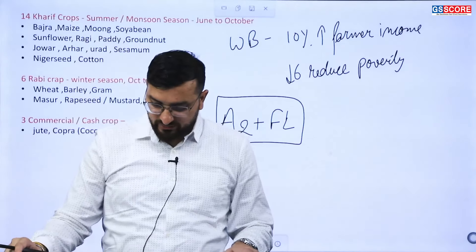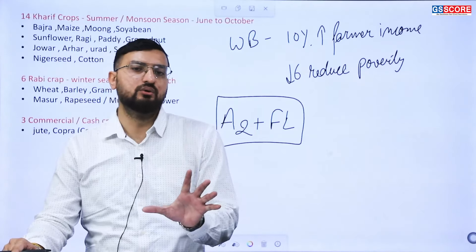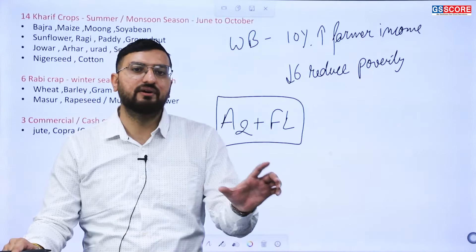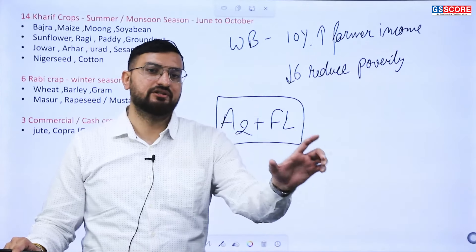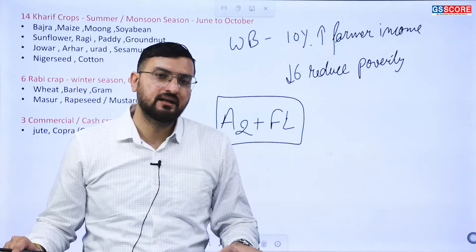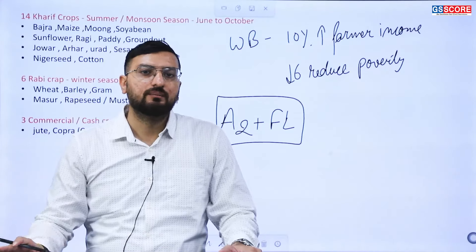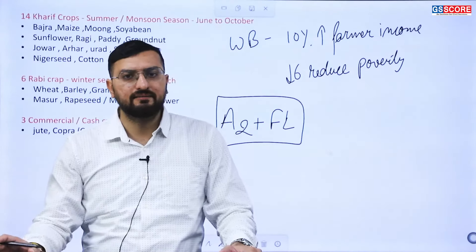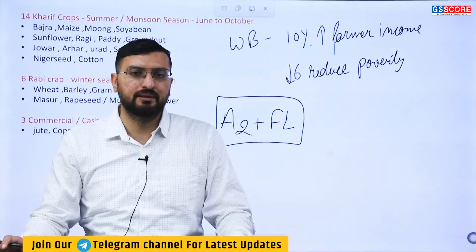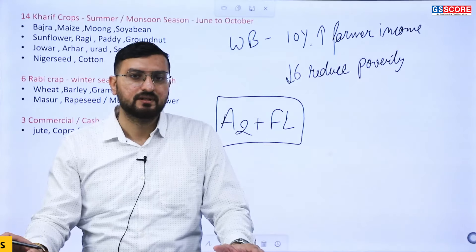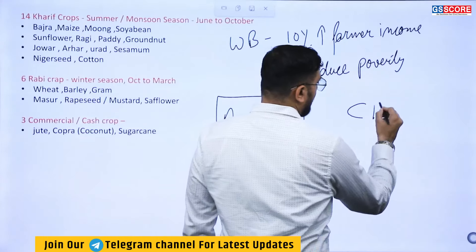In this formula, A2 is the actual cost of production, which includes cost of seeds, fertilizers, pesticides, depreciation of farm buildings and machinery, and interest on working capital. FL is the family labour component — the imputed value of unpaid labour contributed by the farmer's own family members during activities like harvesting. Even though the farmer does not pay his family, that labour cost is included in the MSP calculation. The MSP is announced by CACP — the Commission for Agricultural Costs and Prices.